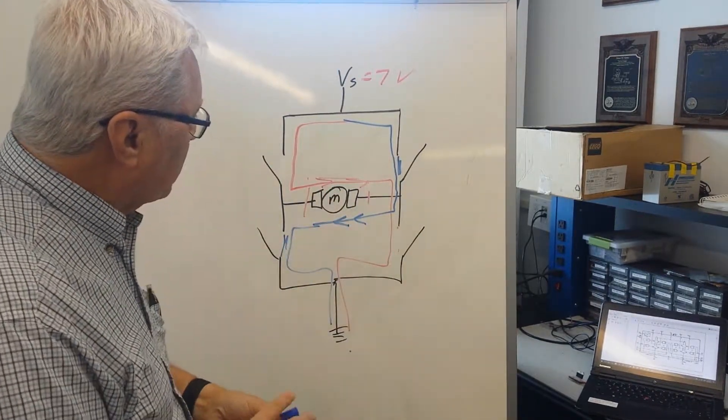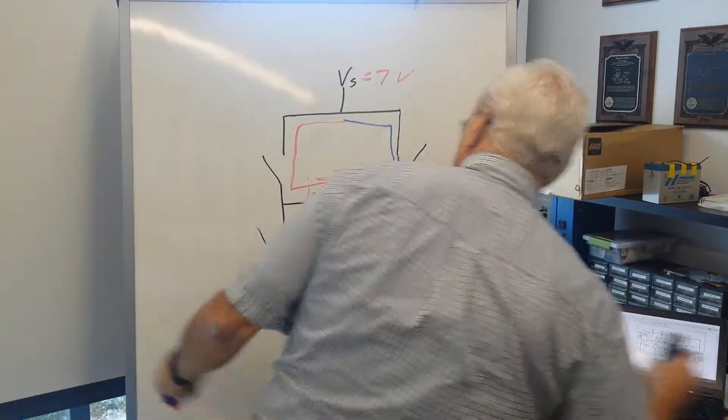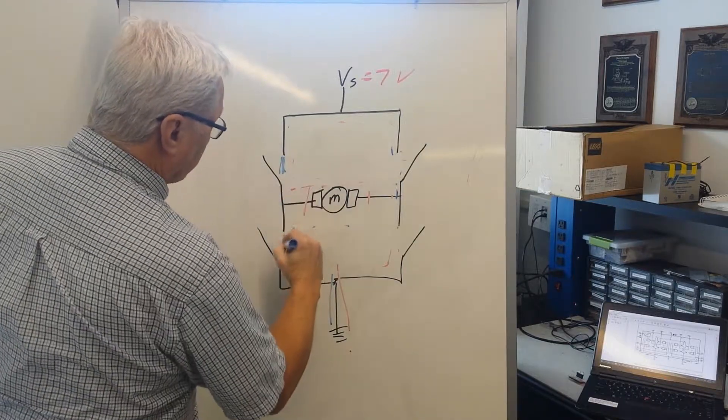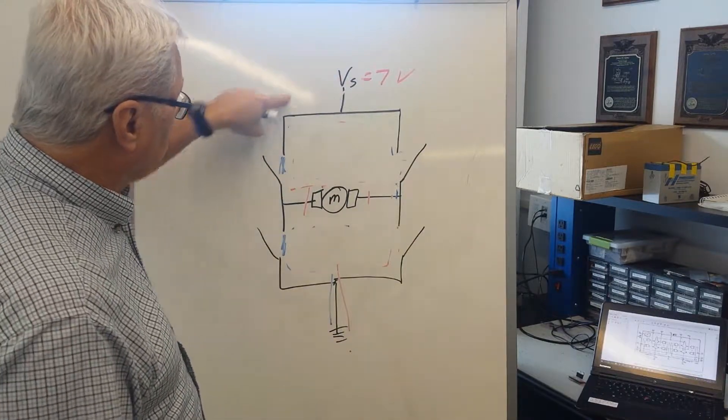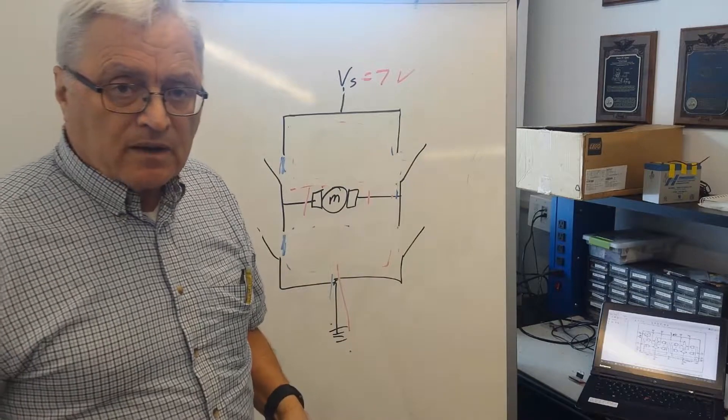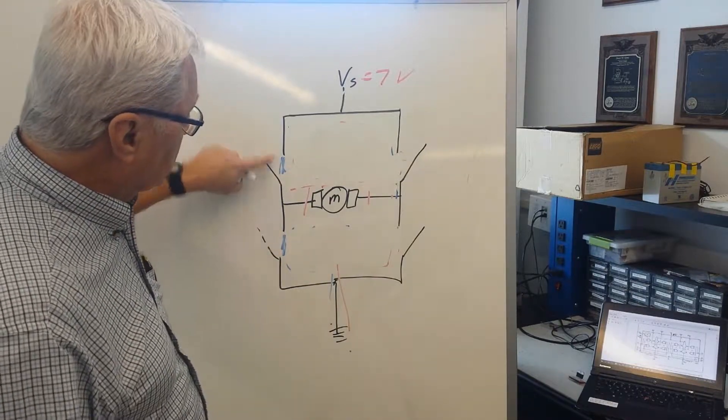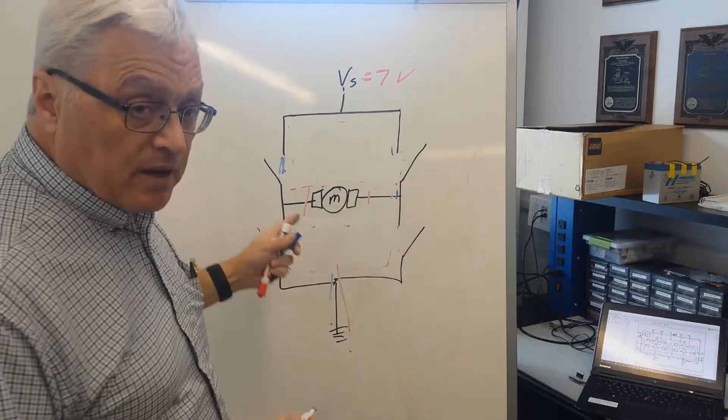A couple things to think about here. What happens if I close this switch and this switch at the same time? Current straight through the switches, straight to ground. I've just shorted out my power supply. These are going to be semiconductors in our real H-bridge. You're going to let the smoke out. That's a bad thing.